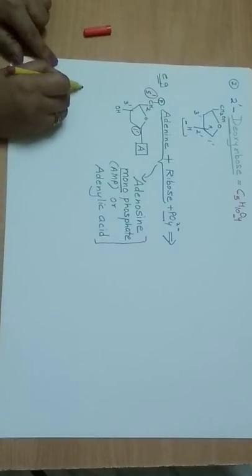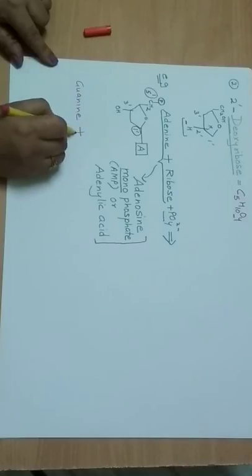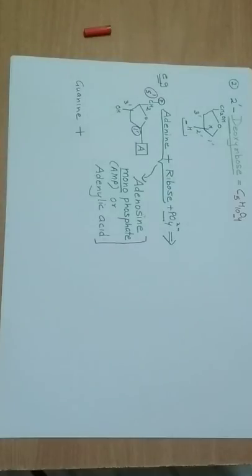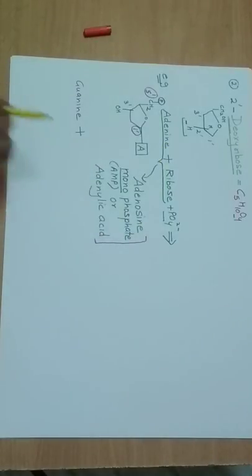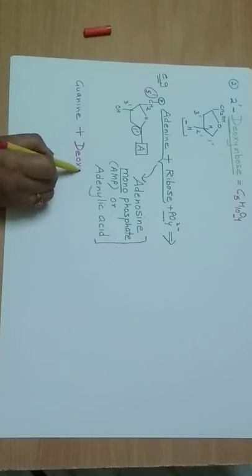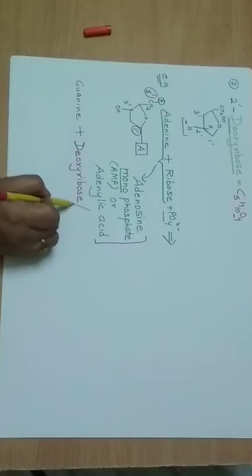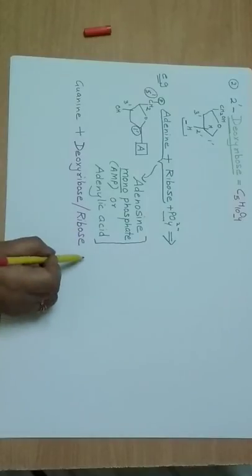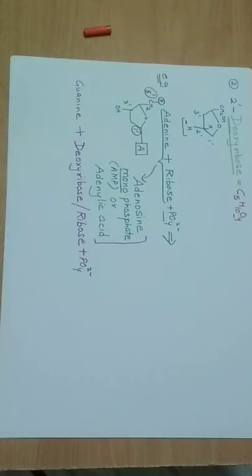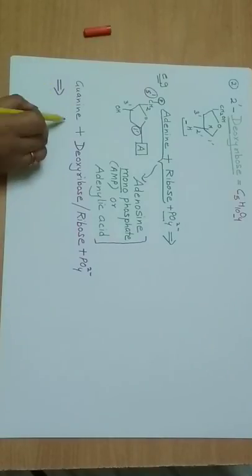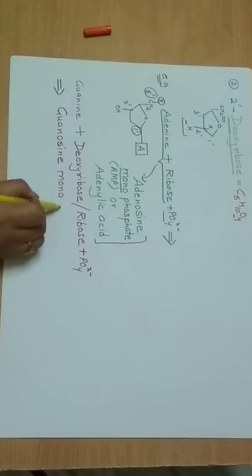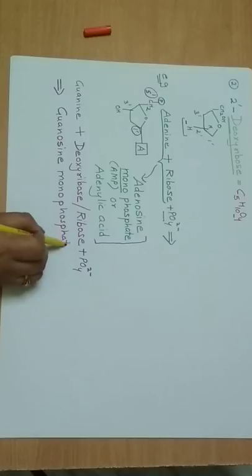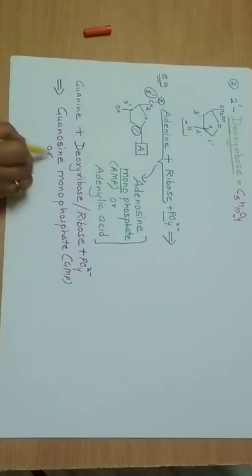If guanine attaches with ribose or deoxyribose plus phosphate, the nucleotide formed is guanosine monophosphate, or GMP. Its other name is guanylic acid.